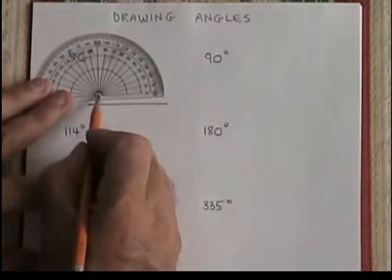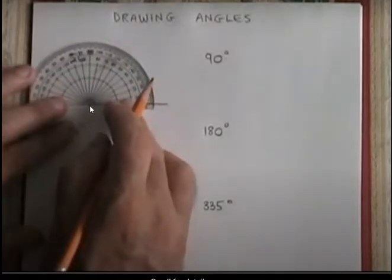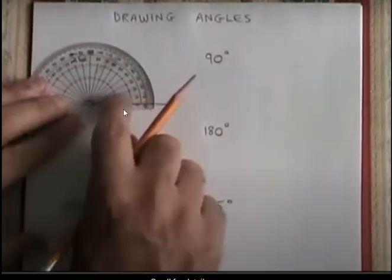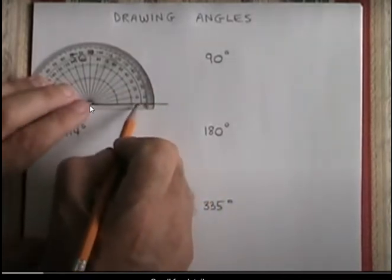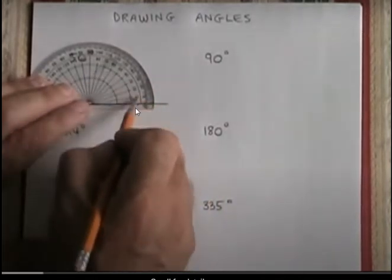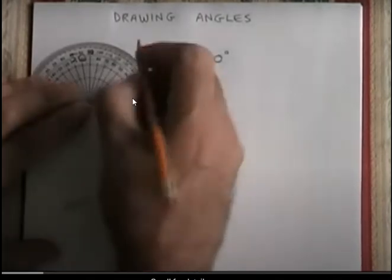You can see the center of the protractor here. Put the edge prime point and this side is for the acute angle.